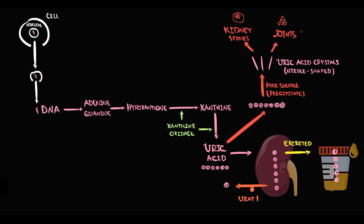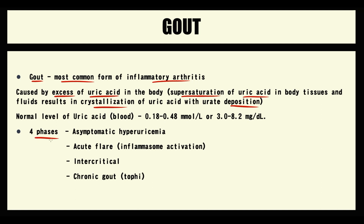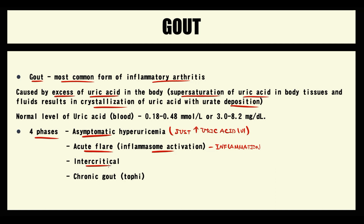Accumulation of uric acid crystals in the joints can cause inflammation of the joints, a condition known as gout. Gout has four phases: the asymptomatic phase, when a person has just very high uric acid levels; the acute flare, due to inflammasome activation, which is the most severe inflammatory phase; the intercritical phase, which is the post-inflammatory phase; and the chronic phase, or chronic gout, when tophi develop.